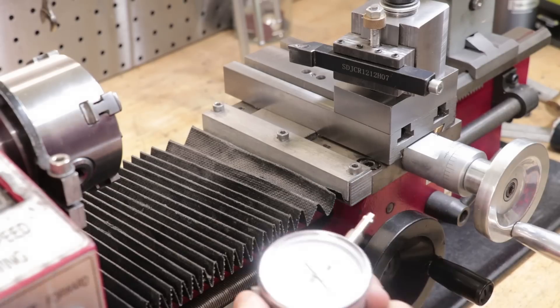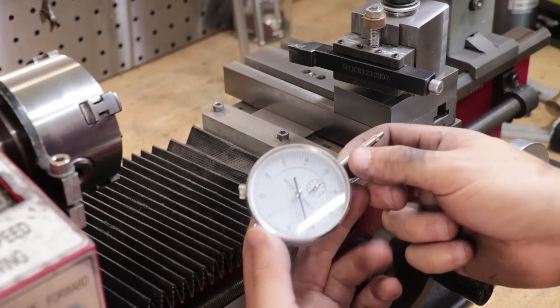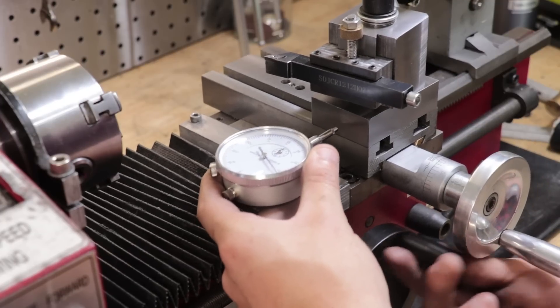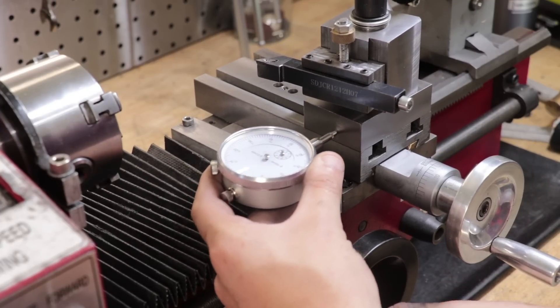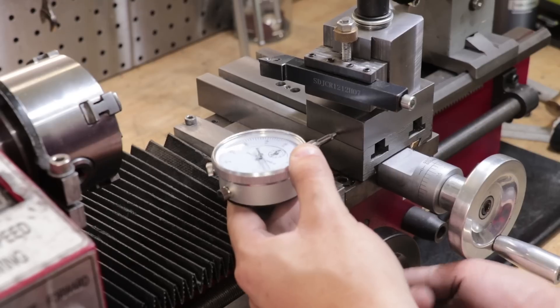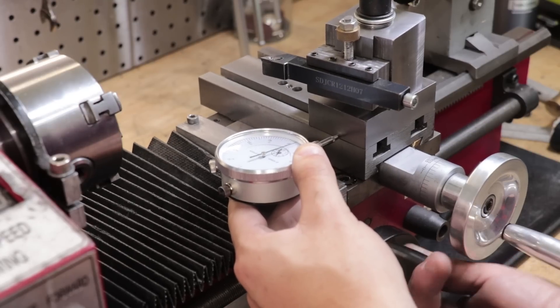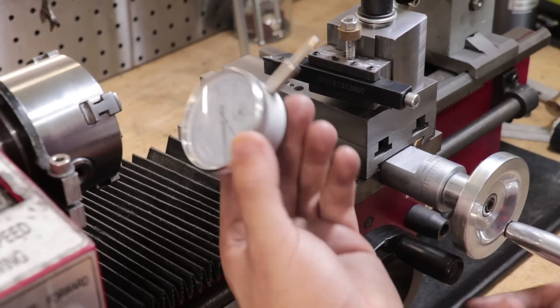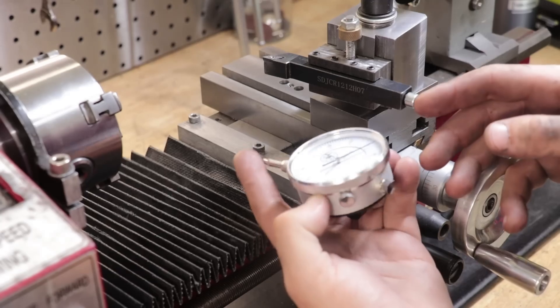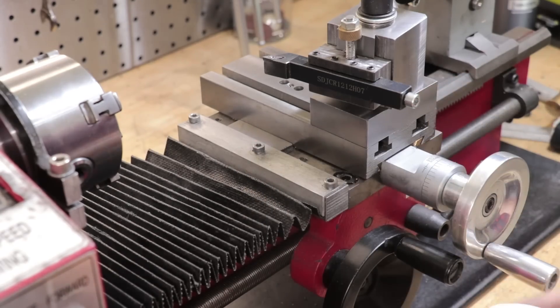And of course that presents us with a new problem. How do we hold the indicator so that we're able to measure the carriage movement? You could use a mag base and indicator but on my small lathe that would be a pretty difficult setup. So the most logical solution is going to be to use a carriage stop which will also have the added benefit of acting as a physical stop for the carriage.